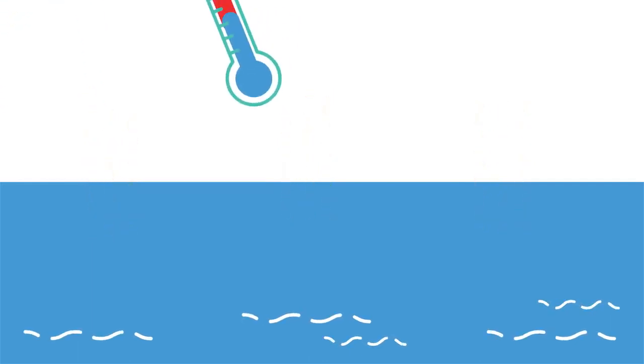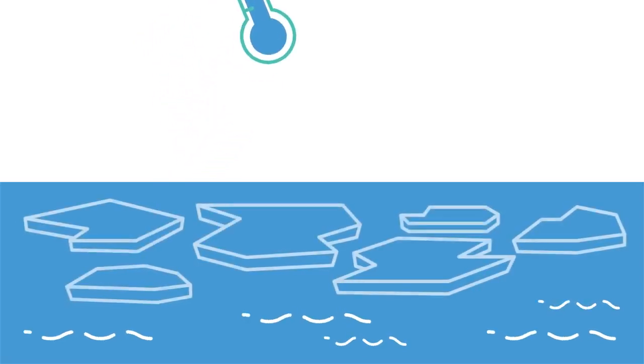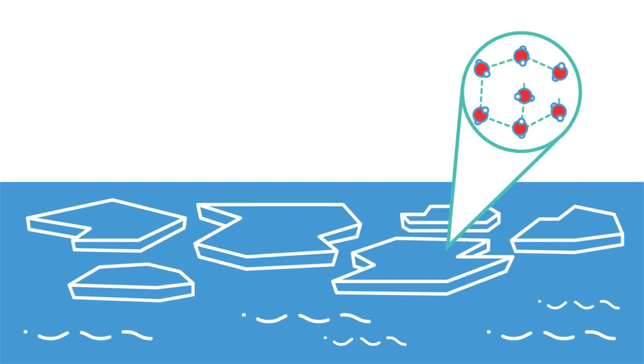But in the winter, the air temperatures are colder, and so seawater freezes, and the ice starts to form again. There is less heat energy within the ice, and so more bonds can form, holding it together as solid ice.